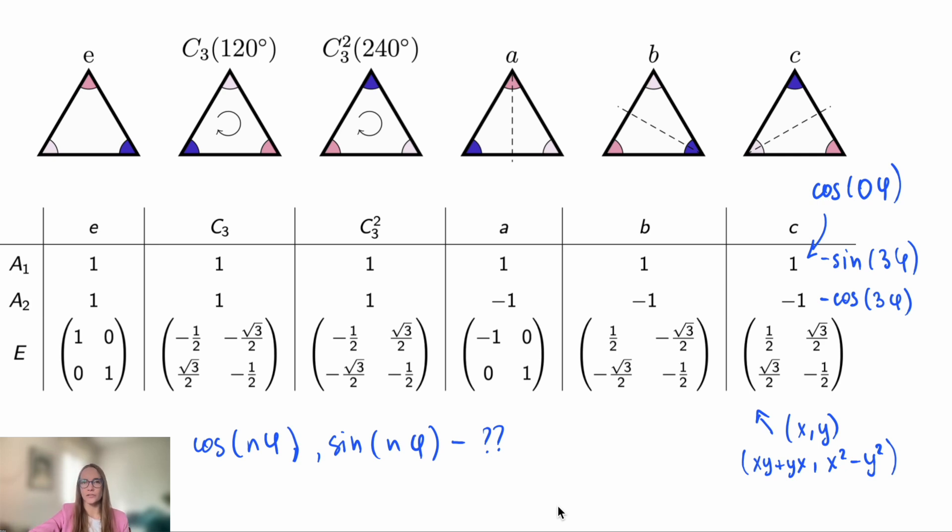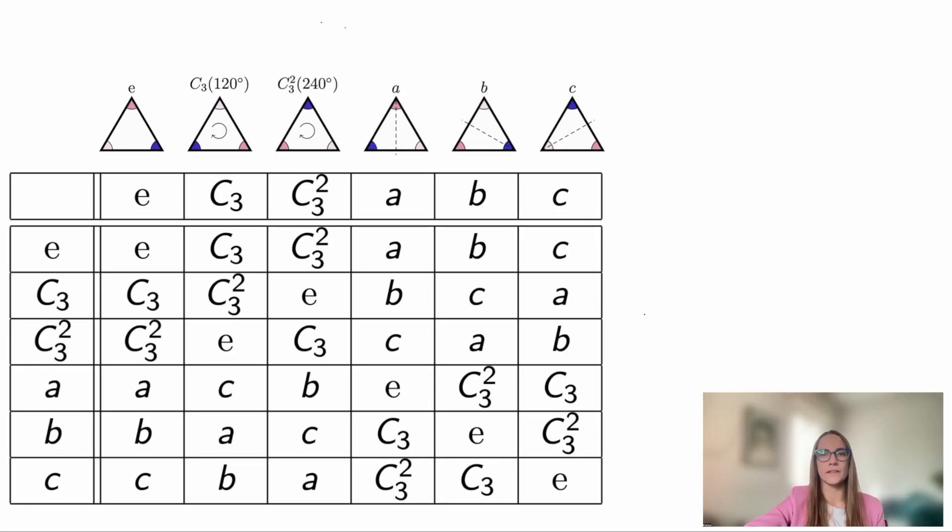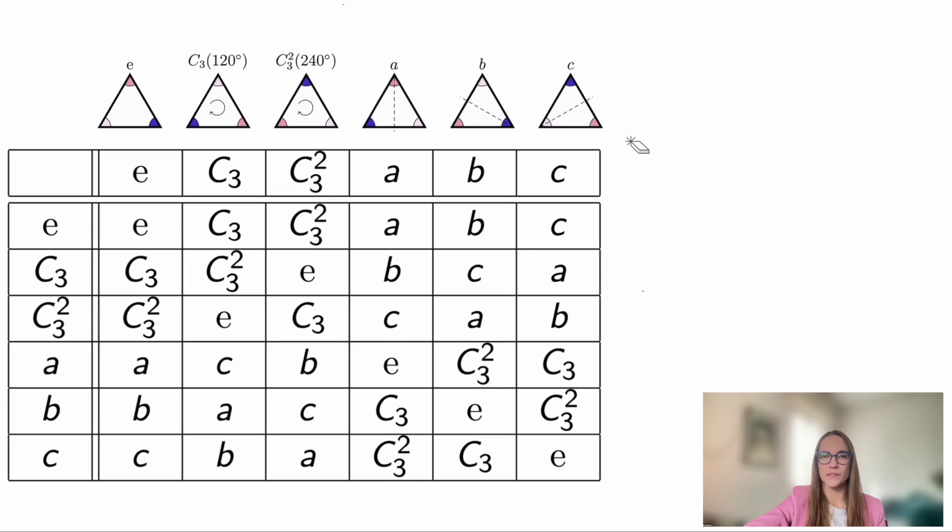In any symmetry group, the multiplication operation is simply the sequential application of transformations. That is, for example, first rotating, then reflecting and so on. Here we write down the multiplication table of this group.